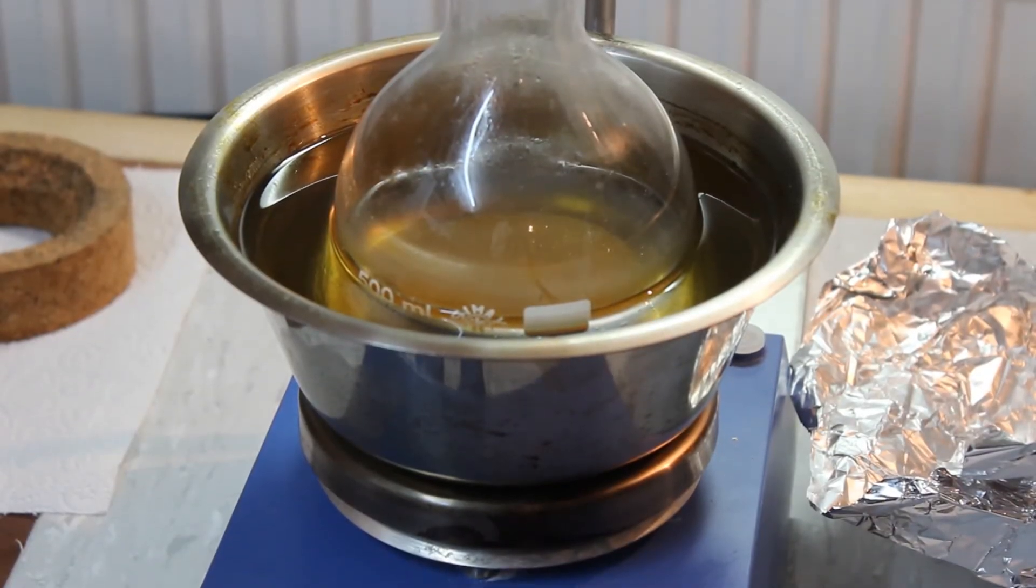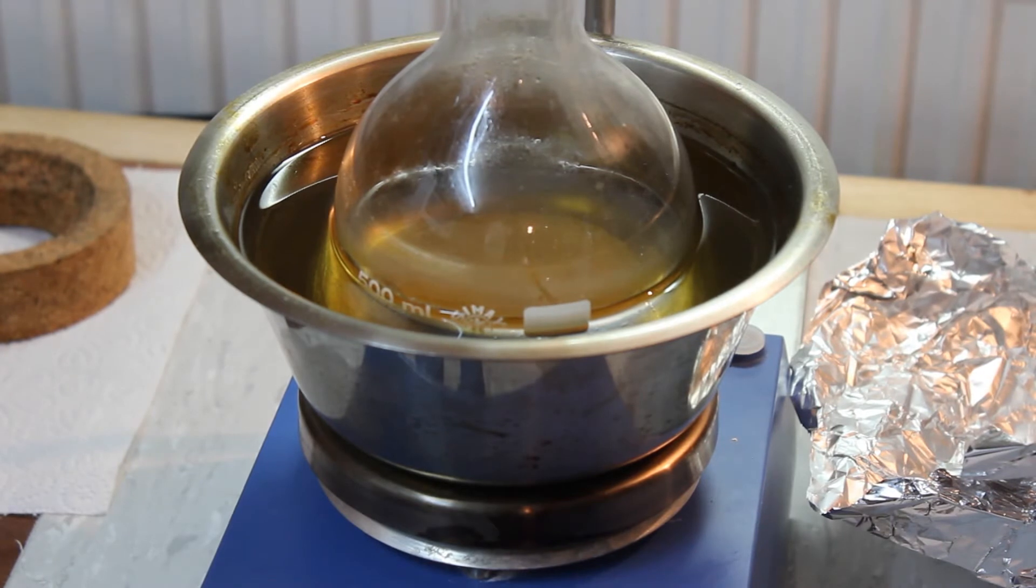We are just now getting the first bubbles of ether but the rate of production is still too slow. So we have to continue heating. The target temperature is 140 to 145 degrees Celsius. Be sure to not heat it over 150 degrees Celsius since then the elimination reaction will be favored and we'll start producing ethylene gas.